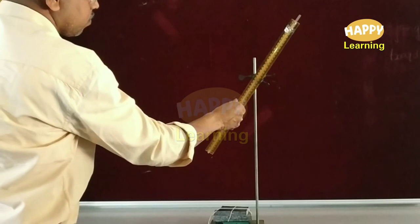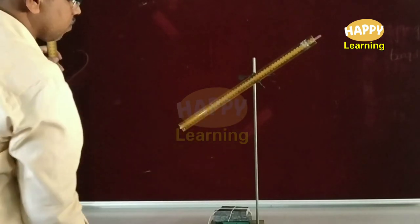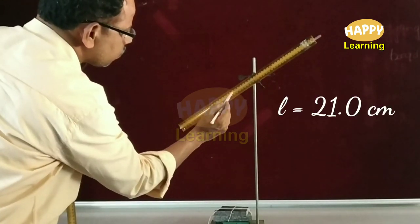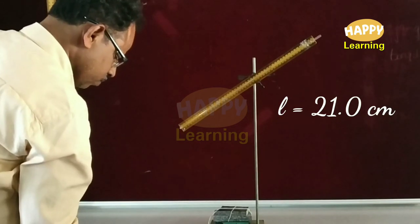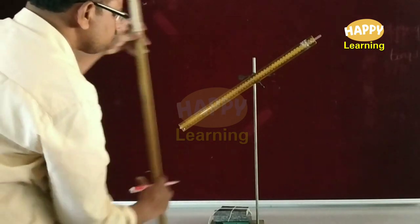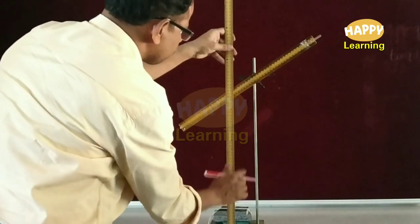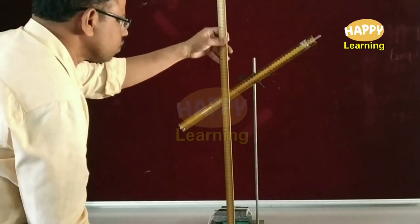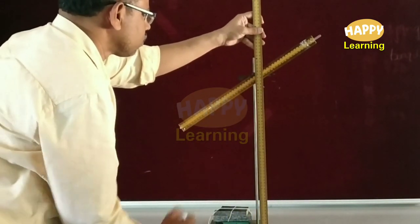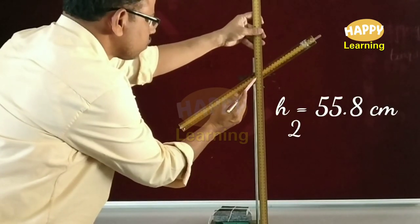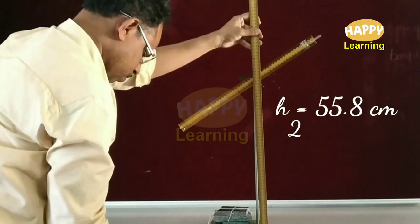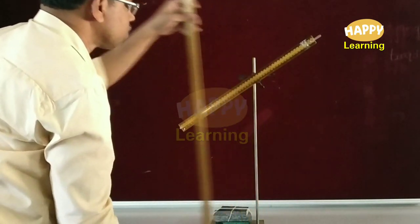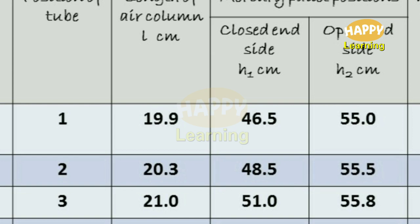Now the position of the quill tube is slightly changed again as shown here. The length of the air column is noted as L. The height of the mercury pellet from the experimental table is noted as h1, and the other end — that is the open end side — is noted as h2. The values of L, h1, and h2 are noted in the table.